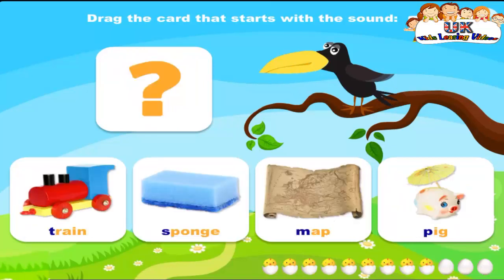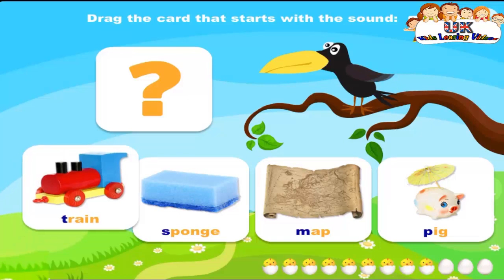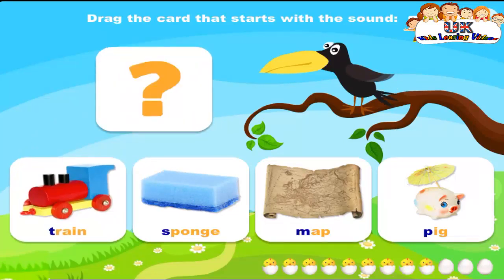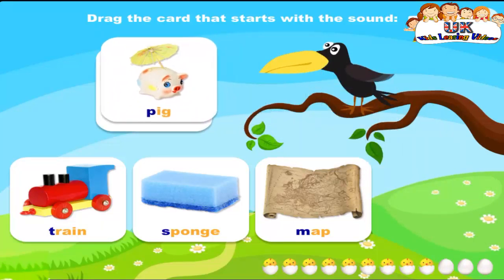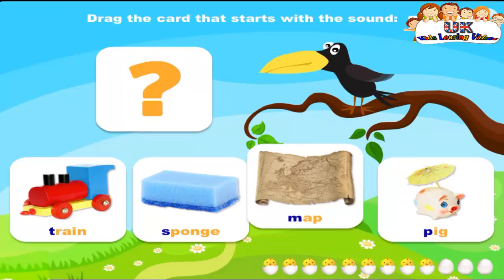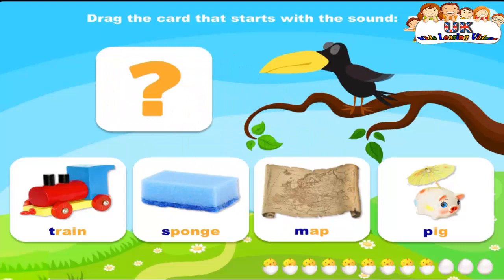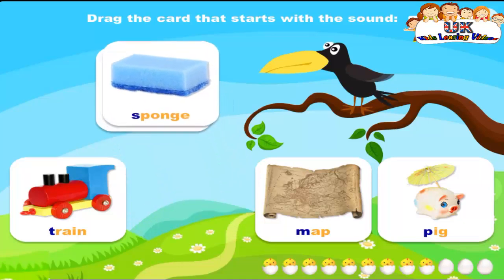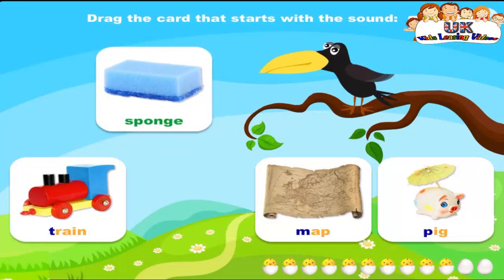Drag the card that starts with the sound S. Train. Drag the card that starts with the sound S. Map. Drag the card that starts with the sound S. Sponge. Correct! S, s, sponge.